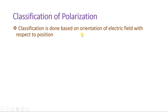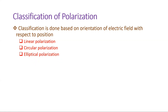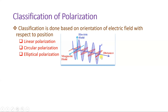Classifications have been done based on orientation of electric field with respect to position. The first category is linear polarization, the second is circular polarization, and the third is elliptical polarization. In linear polarization, orientation of the electric field stays linear. In the diagram, the electromagnetic wave is propagating in one direction, the electric field is shown in blue, and the magnetic field in red. The electric field stays vertical, so this is vertical linear polarization.